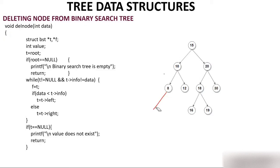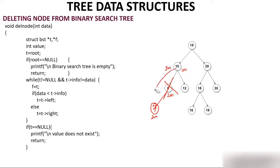Suppose node ten is at address 100, node eight is at address 200, and node seven is at address 300. So ten's left pointer was having 200. The moment I delete eight, ten's left pointer will now have 300, meaning it will point directly to seven.